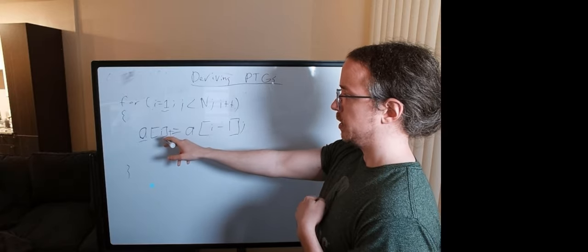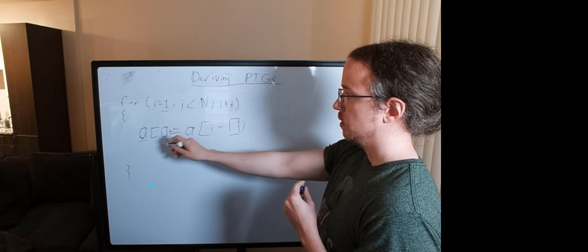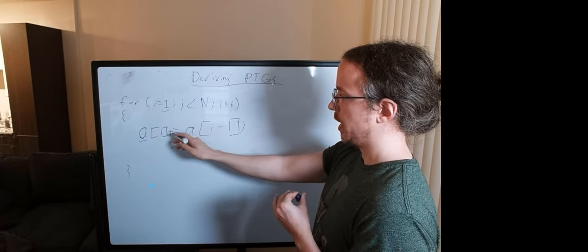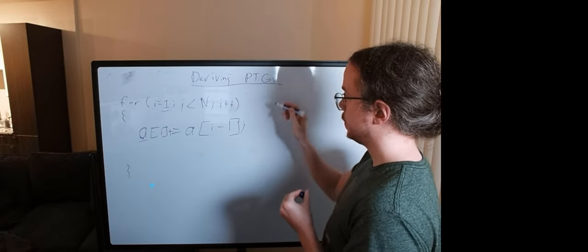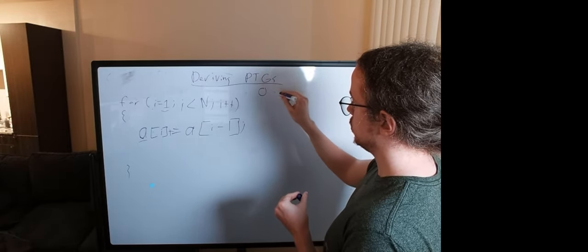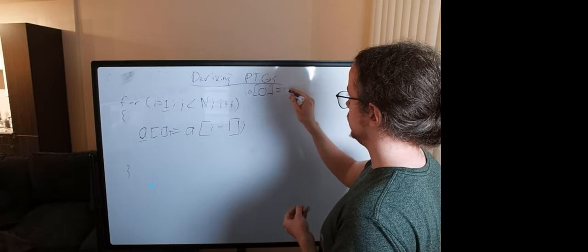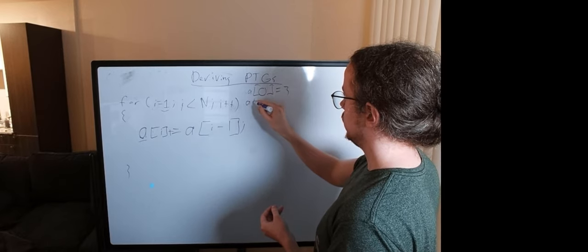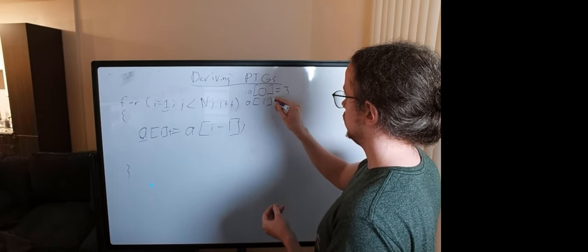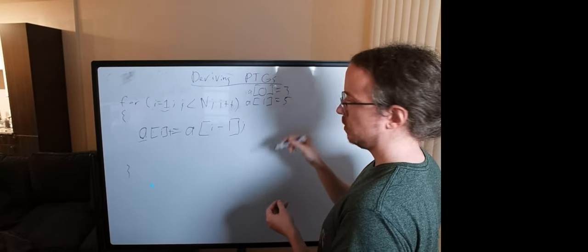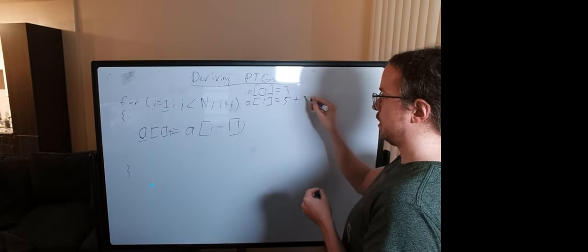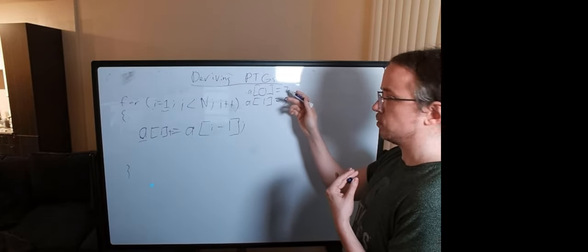So a[i] will be whatever value is in a[i] added to the value of a[i-1]. So you can imagine for a[0], if the value is three, and a[1] starts as five, then a[1] will become five plus three, because this three is up here.